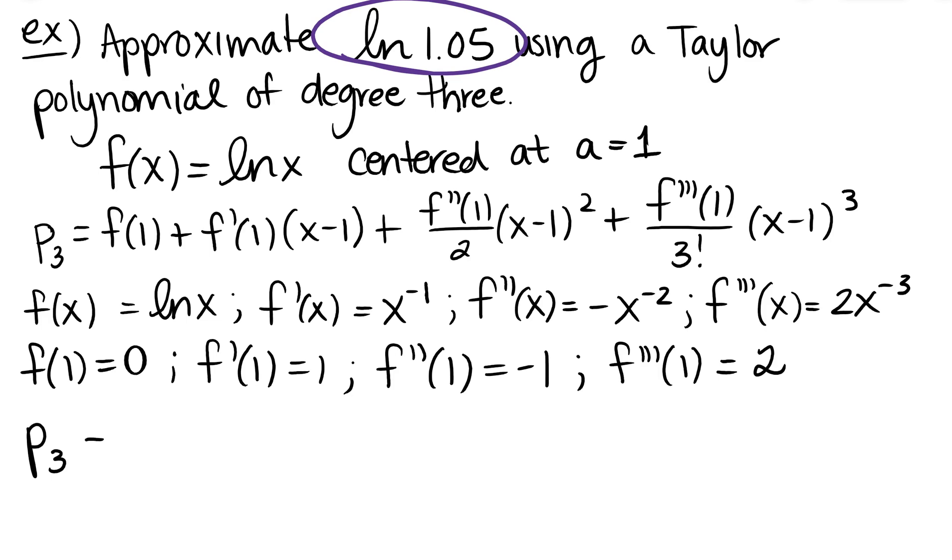So here's my Taylor polynomial of order 3. So my Taylor polynomial of order 3, my f of 0, f of 1 here is 0. f primed of 1 is 1, so that's just going to be x minus 1. f double primed of 1 is negative 1, but I have the 2 on the bottom. So I have minus 1 half x minus 1 squared. And then finally, this guy right here, f triple primed of 1, that's 2. So let's think about that for a moment. So this guy right here, I'm going to have 2 over, and then remember, 3 factorial is 3 times 2 times 1. So see, those 2s are going to cancel. So I'm going to get plus 1 third times x minus 1 cubed.